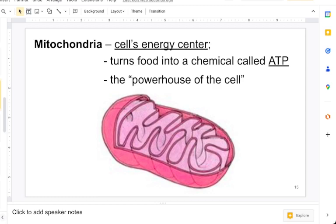The mitochondria is the cell's energy center. It's going to help generate ATP through the process of the Krebs cycle, and it is called the powerhouse of the cell.